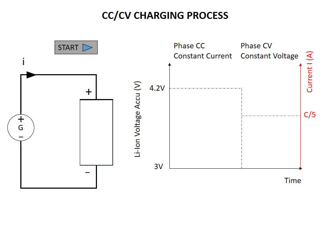To explain the CCCV charging process, I will use this animation. On your left, you have an electronic circuit made of a power supply generator directly connected to a cell. This power supply can be set as a constant current source or a constant voltage source. The cell is white, which means it is empty; when we fully charge the battery, it will be blue. On your right, you have a graphic showing the voltage of the battery versus time on the left axis, and the current getting into the battery versus time on the right axis. The voltage will be in black, the current will be in red.